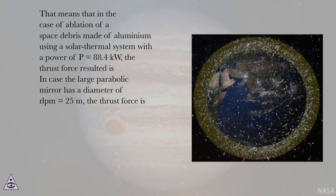space debris made of aluminum using a solar thermal system with a power of P = 88.4 kilowatts, the thrust force resulted is [calculated].